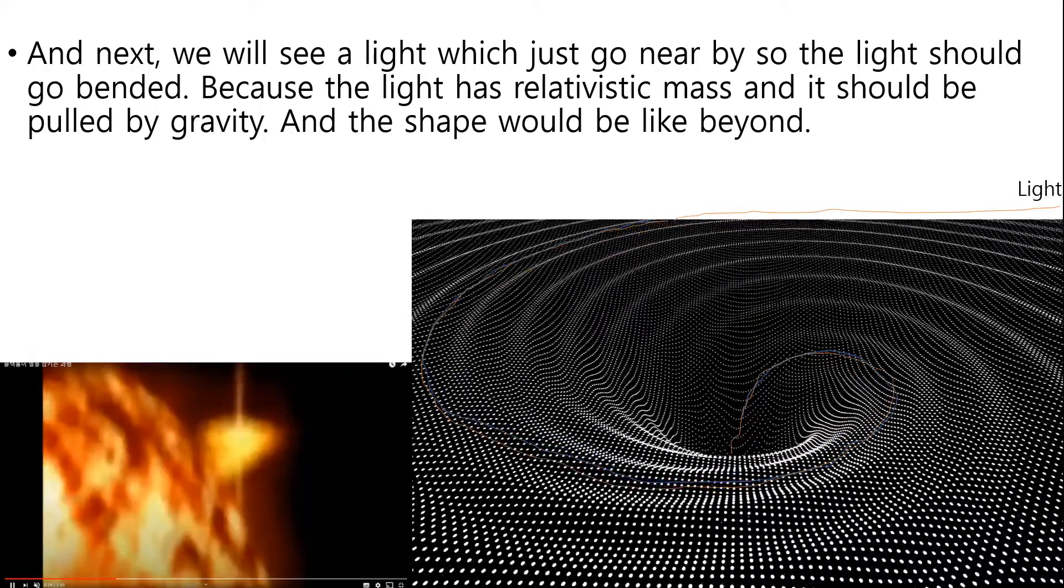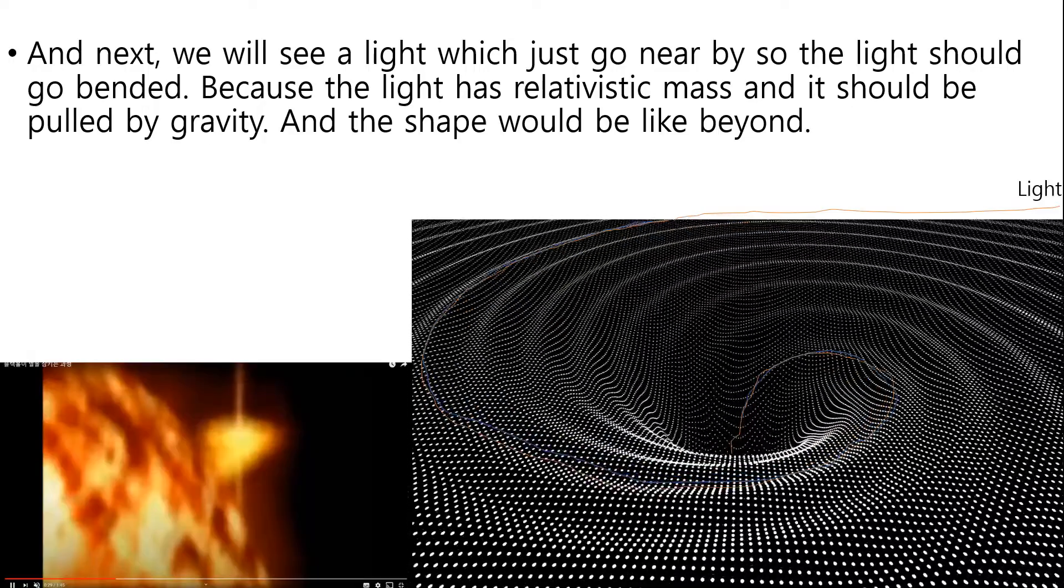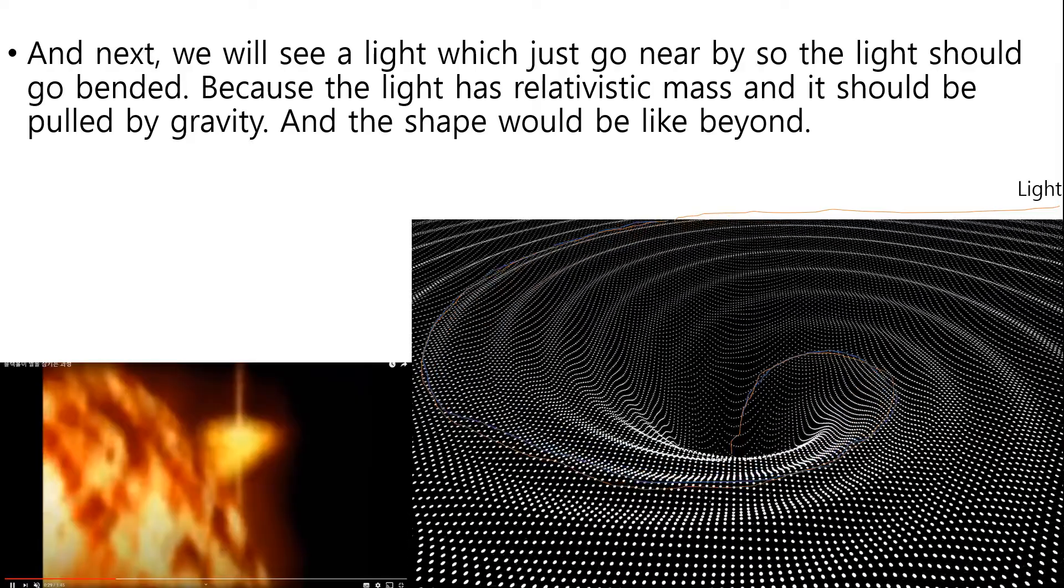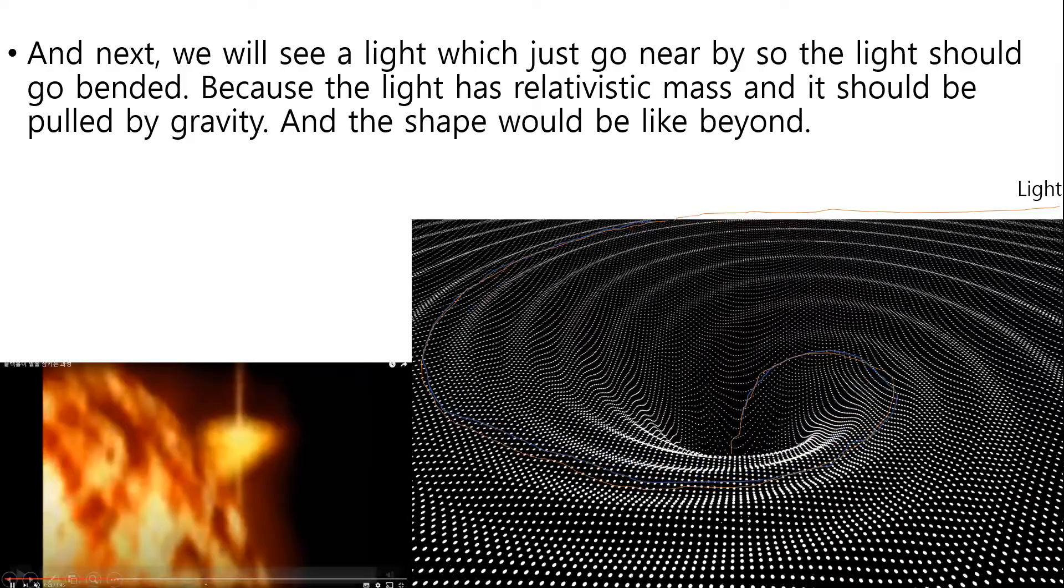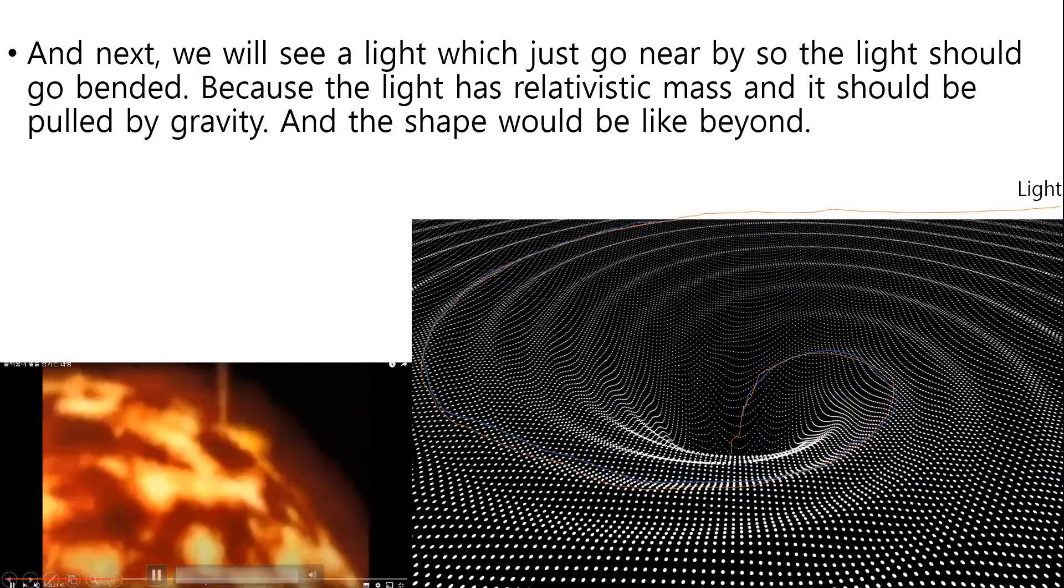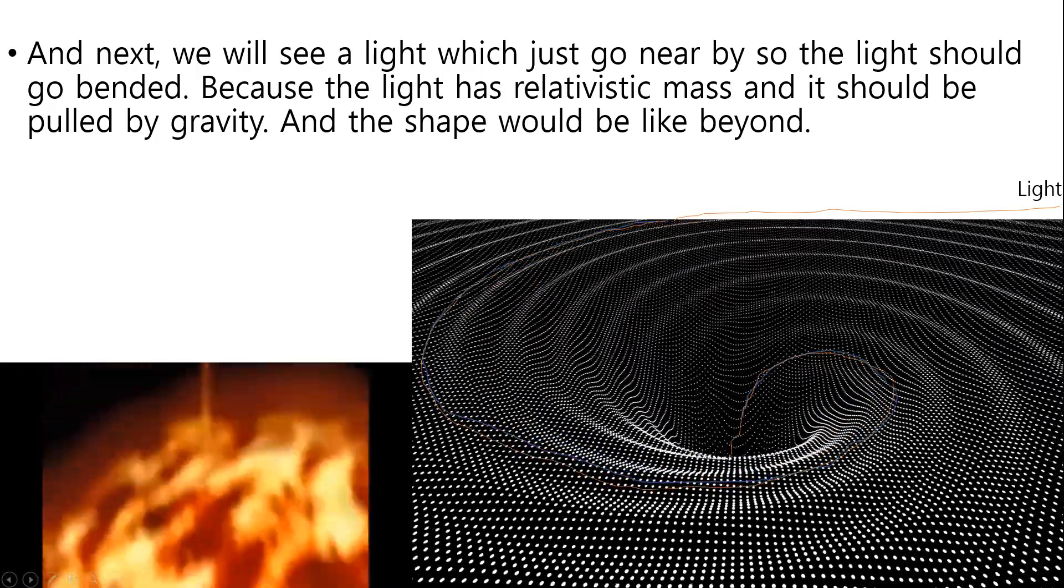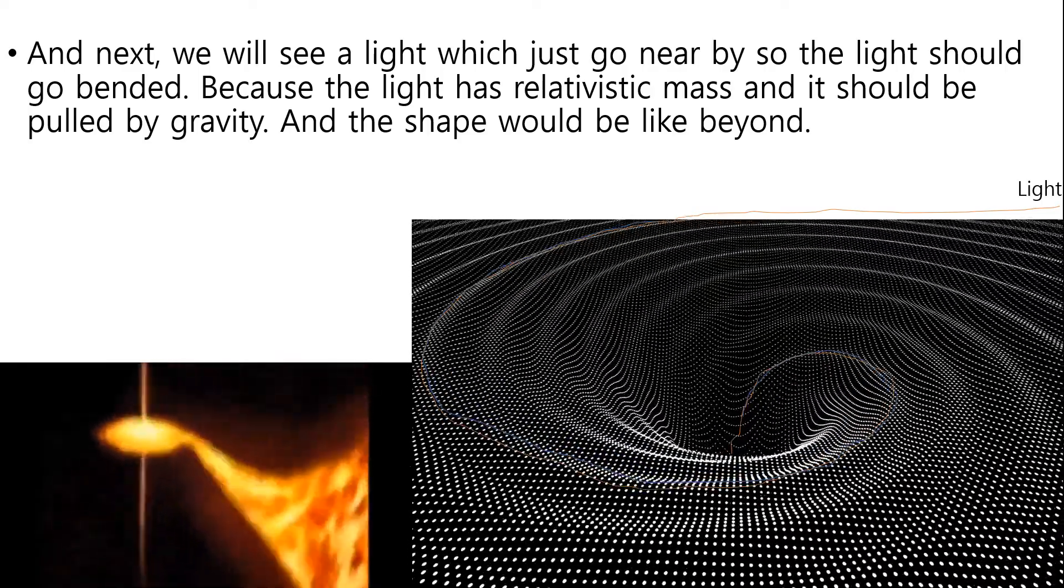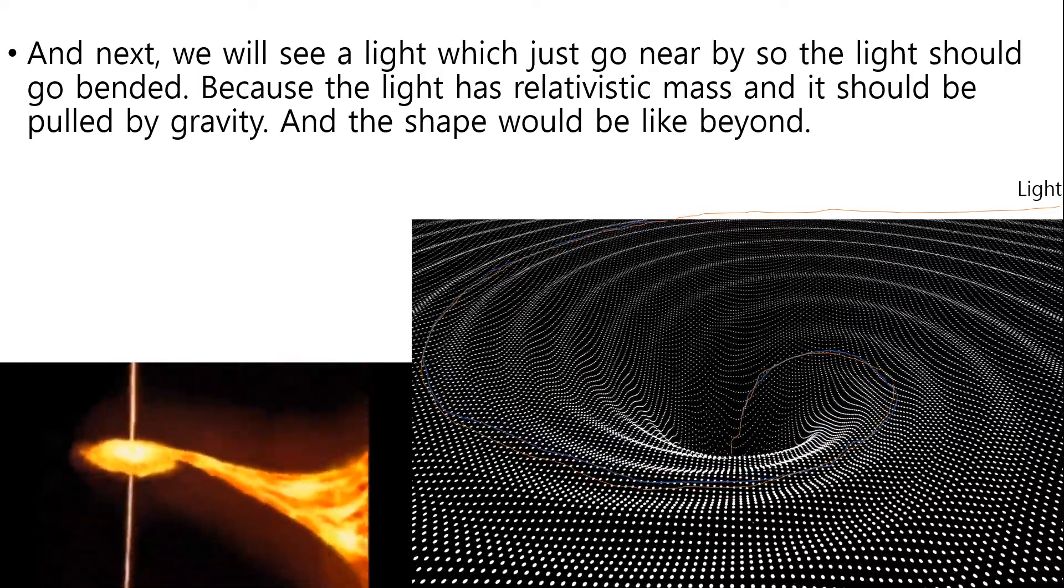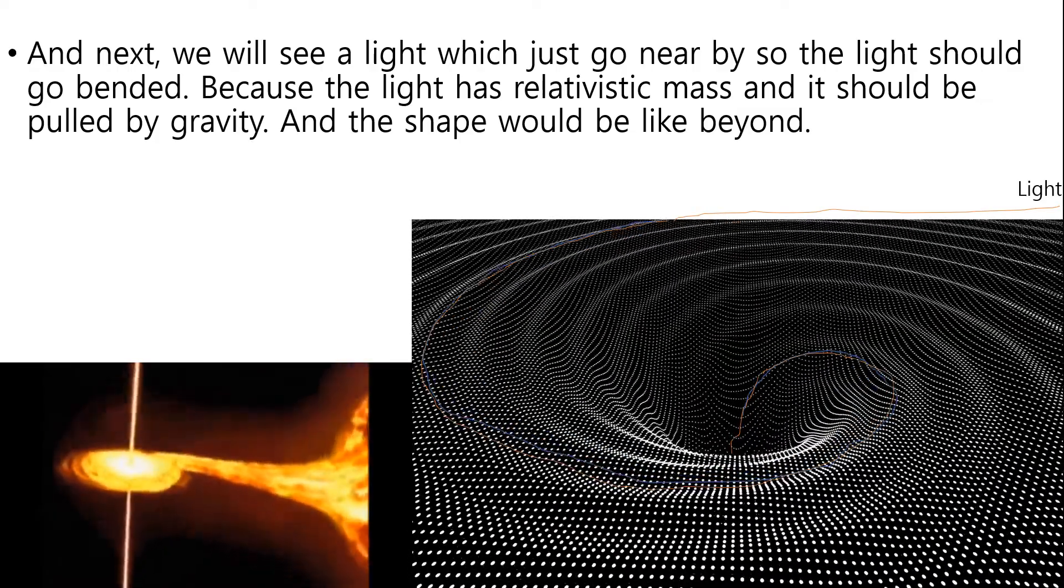And next we will see a light which just go nearby. So the light should be bent because the light has relativistic mass and it should be pulled by gravity. And the shape would be like beyond.